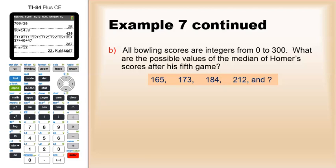Now, all bowling scores are integers between 0 and 300. So what are the possible values of the median after his fifth game? Again, we know four of them, we don't know the fifth. Well, let's suppose we take any answer. The answer overall is any number between 173 and 184, including both those numbers. So how do I get that answer?